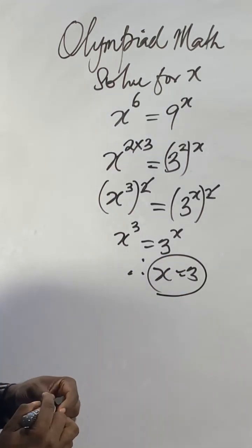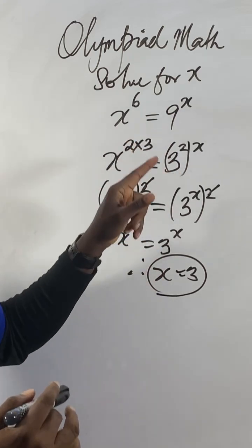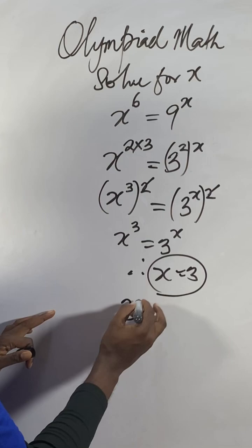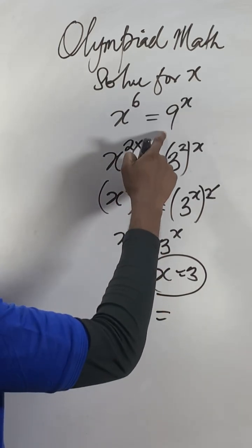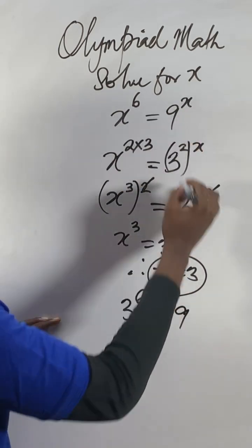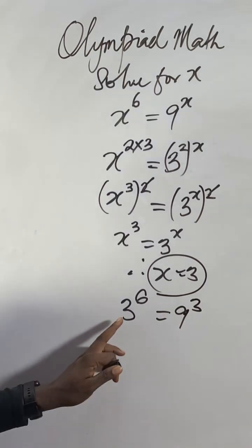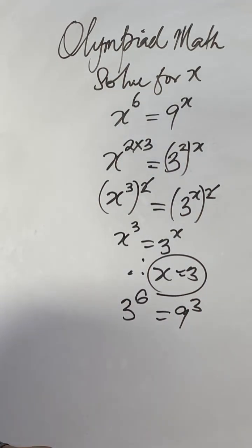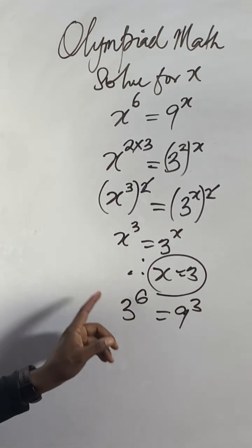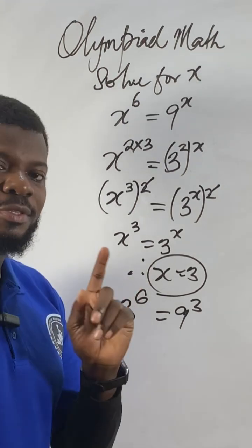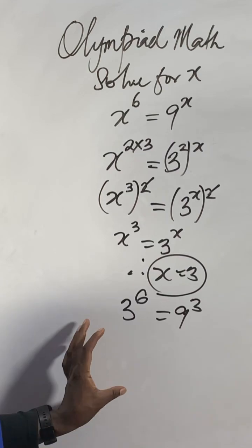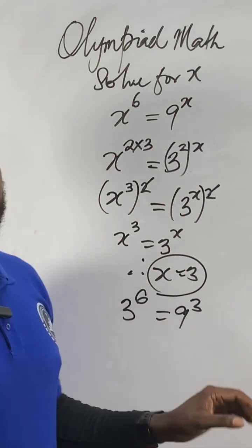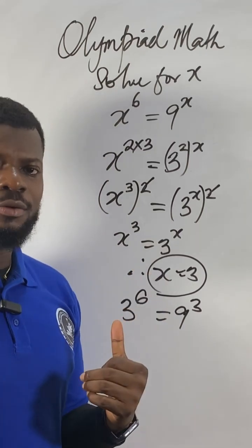If you want to check whether this is correct, by inspection substitute three here to see if you're correct. It will be three to the power of six equals nine to the power of three. Check: three to the power of six is three times three times three times three times three times three. Nine times nine times nine — check the answer. If they don't give you the same, drop a comment in the comment section.